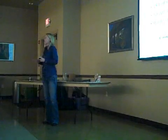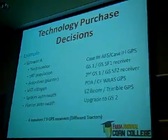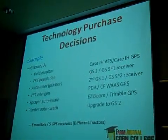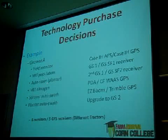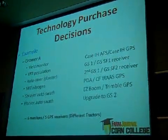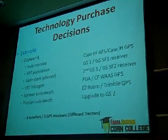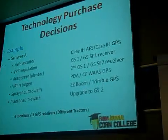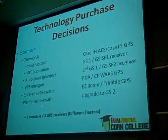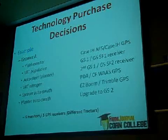Here's a real example of a grower: he's got a yield monitor with a Case IH AFS monitor, he's doing variable rate population with his planter using a GreenStar 1 with a satellite receiver, then he wants to auto steer his planter and has to have a second GS1 and second receiver for that. He's doing variable rate nitrogen using a PDA with a watch signal, and his sprayer has auto swath with EasyBoom and triple GPS. Now he wants to add planter auto swath — so he's going to have to upgrade to GS2 instead of GS1.